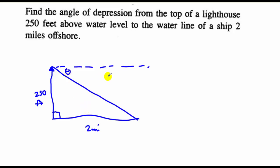However, we know that this line up here is parallel to this line down here. Therefore, by alternate interior angles, we can say theta is equivalent to this angle down here, and that's what we're trying to find. So this angle of elevation, if you will, is equal to this angle of depression.